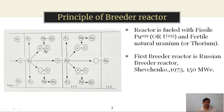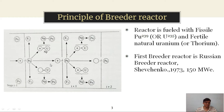Instead of natural uranium, if we use thorium, we will get uranium-235 as a fissile material. And even during this process, a small amount of energy is also generated.